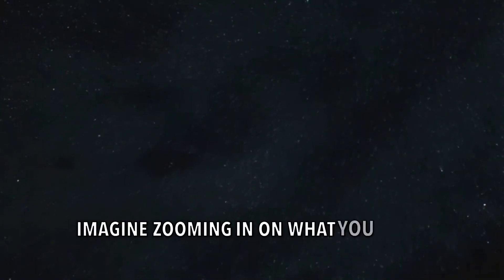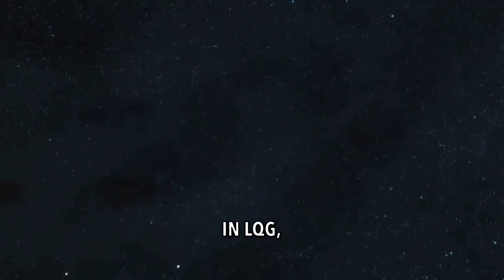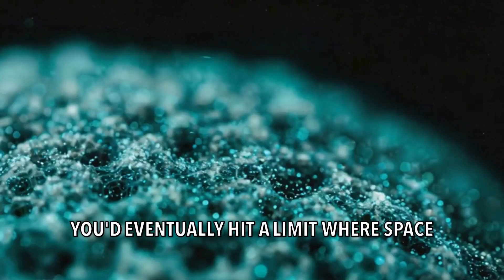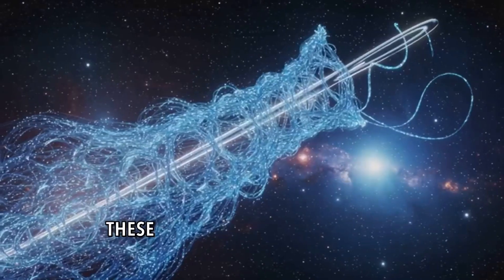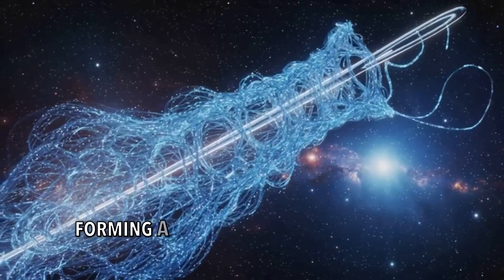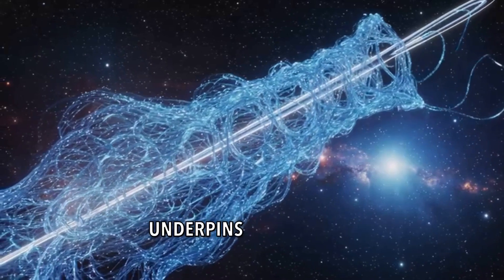Imagine zooming in on what you think is empty space. In LQG, you'd eventually hit a limit where space is composed of tiny, indivisible loops of gravitational field lines, typically on the scale of the Planck length. These loops are interconnected, forming a sort of cosmic crochet that underpins our reality.